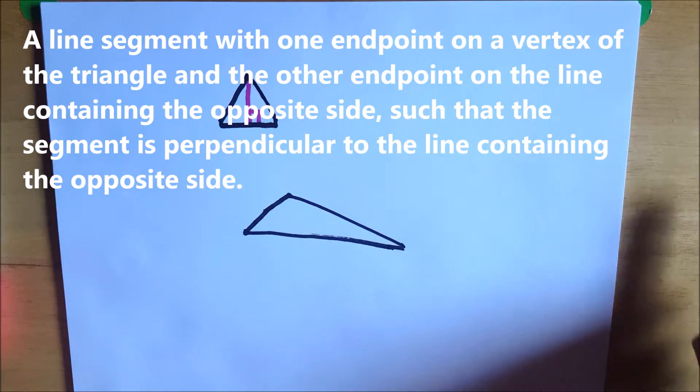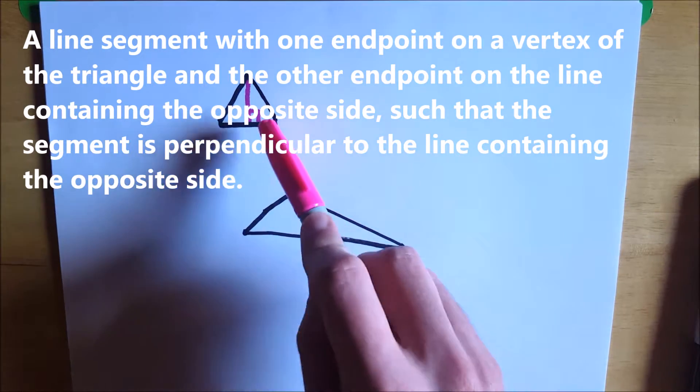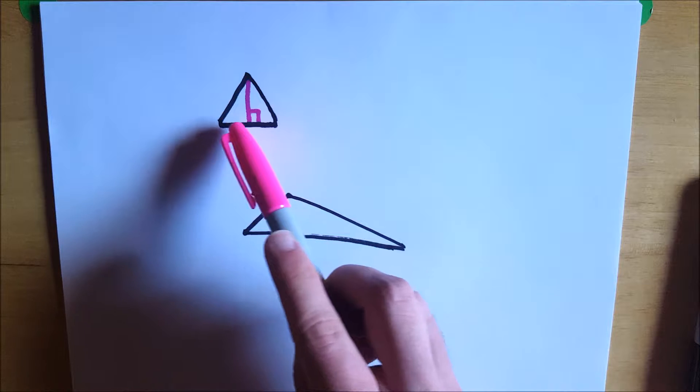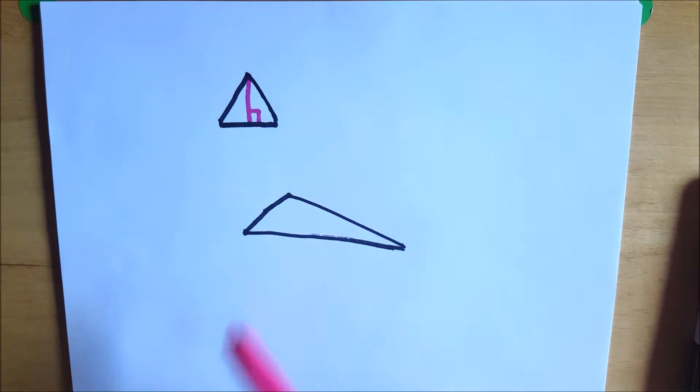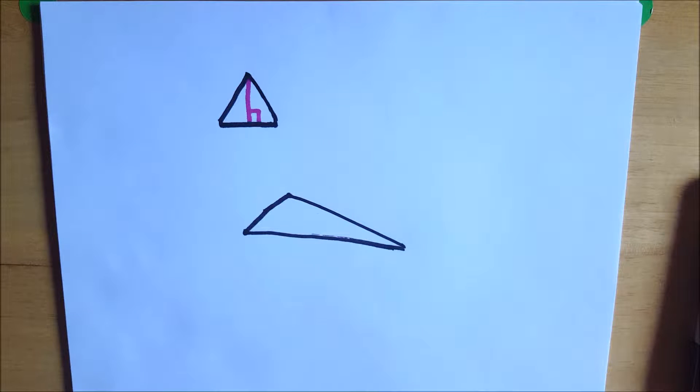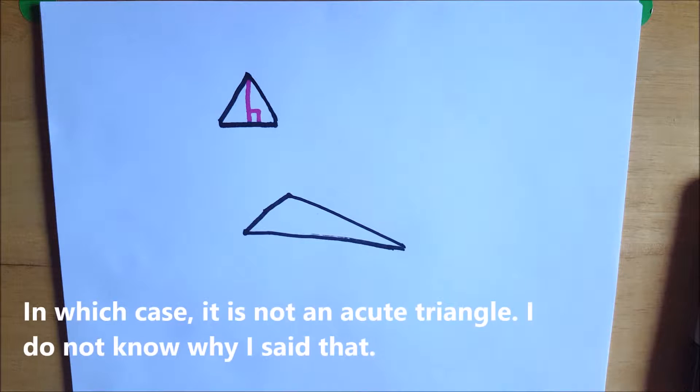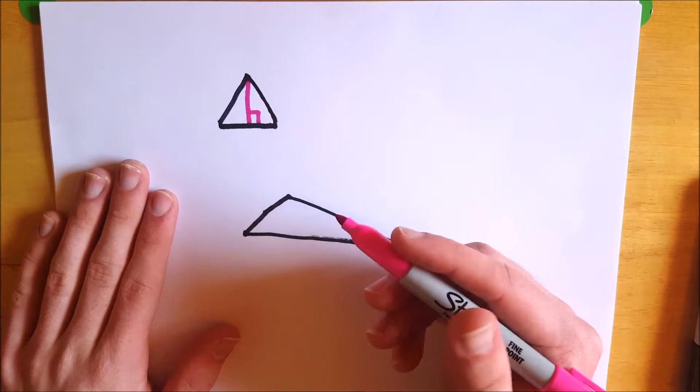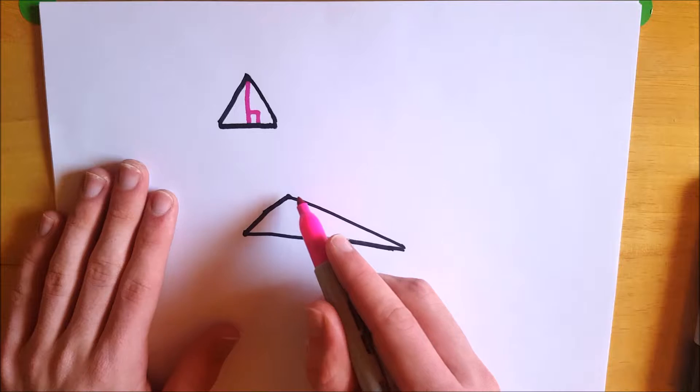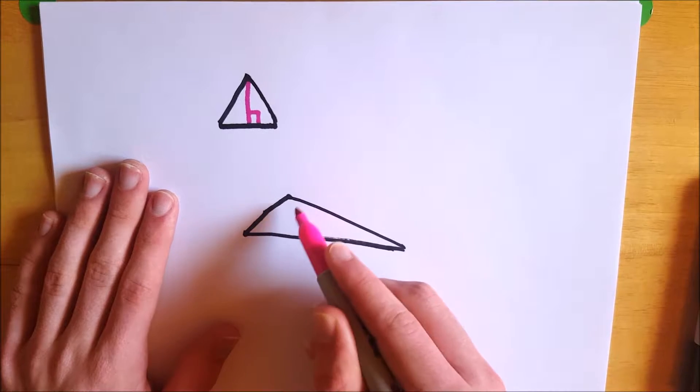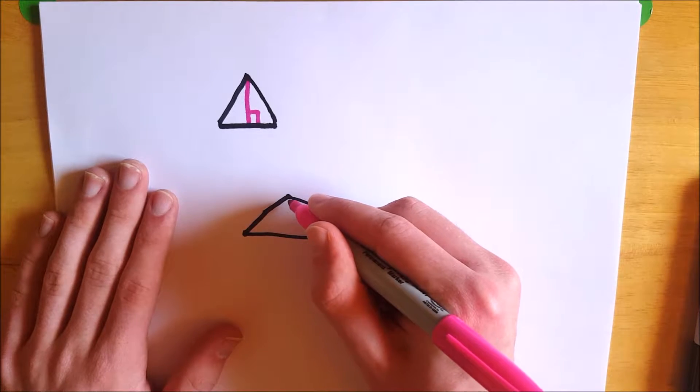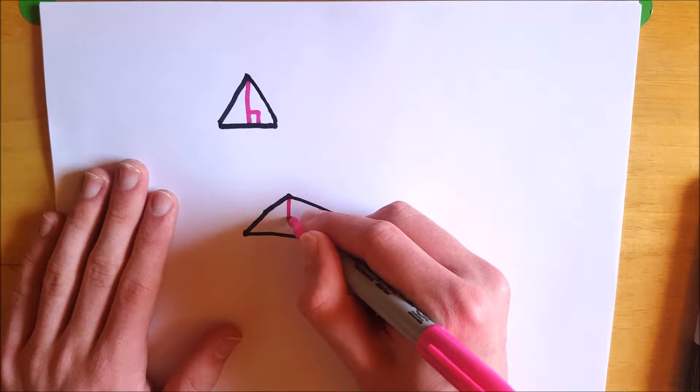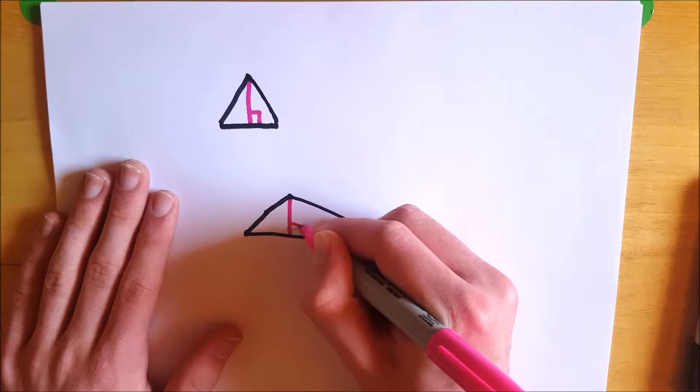So if we look at an acute triangle like we did here, every altitude is going to be inside of the triangle unless your acute triangle is a right triangle. We'll look at that case in just a moment. But let's take a look at an obtuse triangle first. So in an obtuse triangle, the altitude which has one endpoint on the obtuse angle is going to land inside the triangle as you can see there.